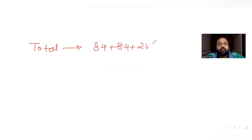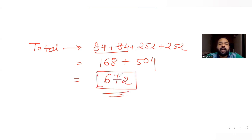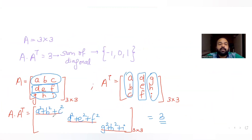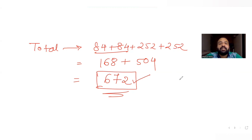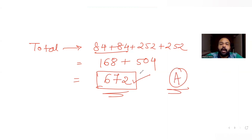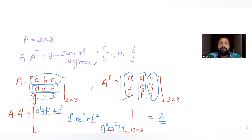The total number of matrices is 84 + 84 + 252 + 252 = 672. So the total number of 3×3 matrices A such that the sum of diagonal elements of A times A-transpose equals 3 is 672. The correct answer is option A. I hope you understood how to solve questions combining properties of matrices with combinations. Like, share, and subscribe if you found this helpful!